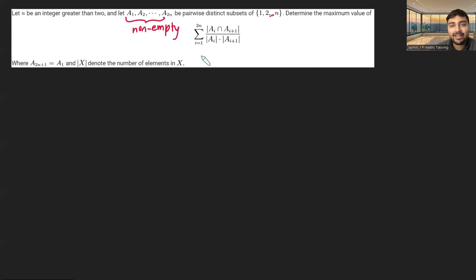We want to determine the maximum value of this sum here. It's the sum from i equals 1 to 2n of the cardinality of the intersection between ai and ai plus 1, divided by the cardinality of ai times the cardinality of ai plus 1. So cardinality just means the number of elements in the set.